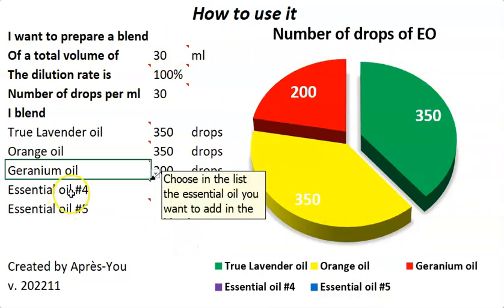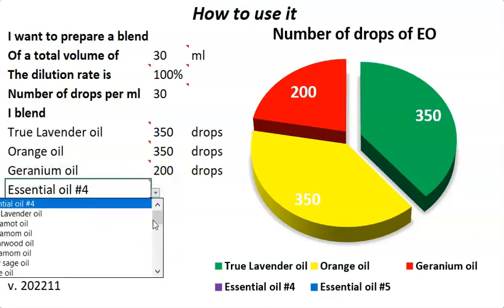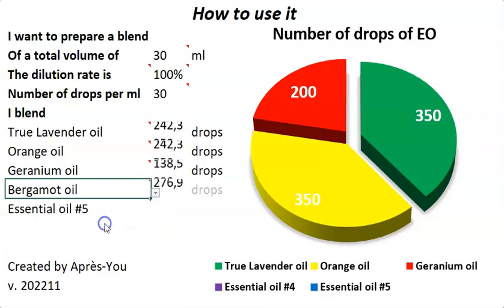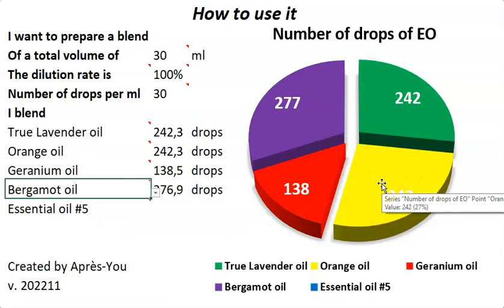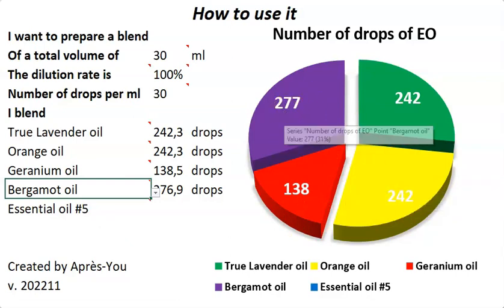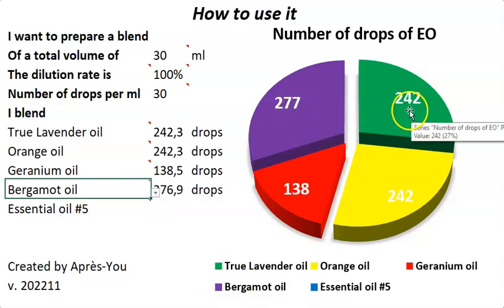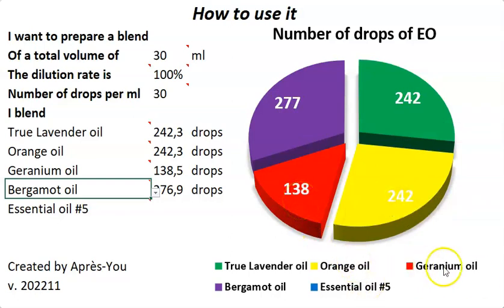Now I would like to go a little further and add another oil — for example, bergamot. Bergamot is something very light in terms of smell and perfume, and in that case you will see you need more drops of bergamot. Bergamot is 277, 242 for the true lavender, 242 for the orange, and 138 for the geranium.